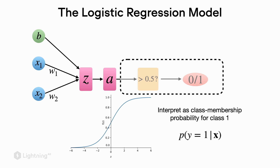How is predicting class labels 0 and 1 related to logistic regression and its activation function? We can think of the activation function output as a class membership probability — namely, the probability that a given input example belongs to class label 1, given its input features. This is also the reason why the activation function returns values between 0 and 1, so it provides a proper probability score.